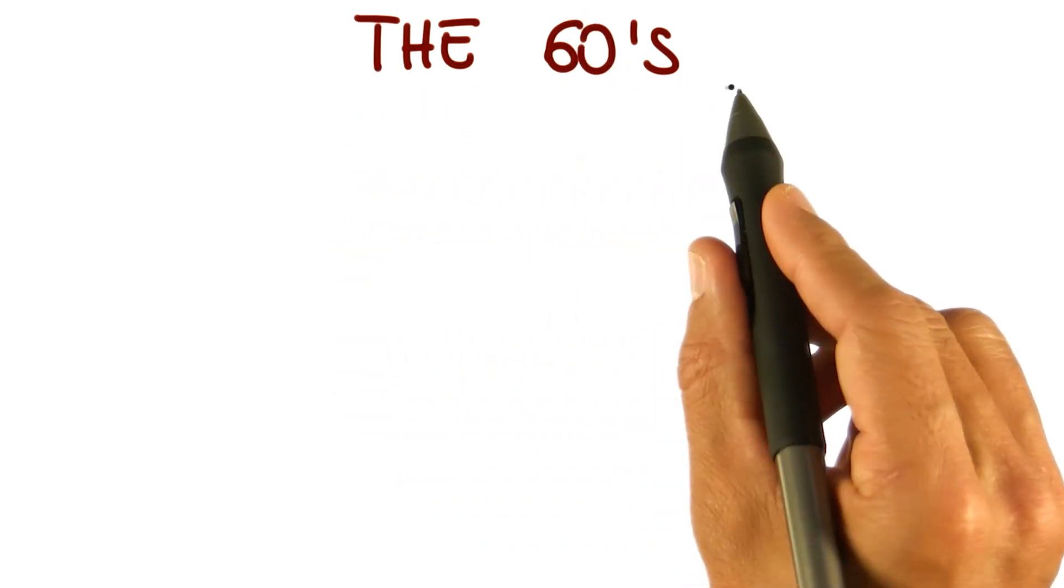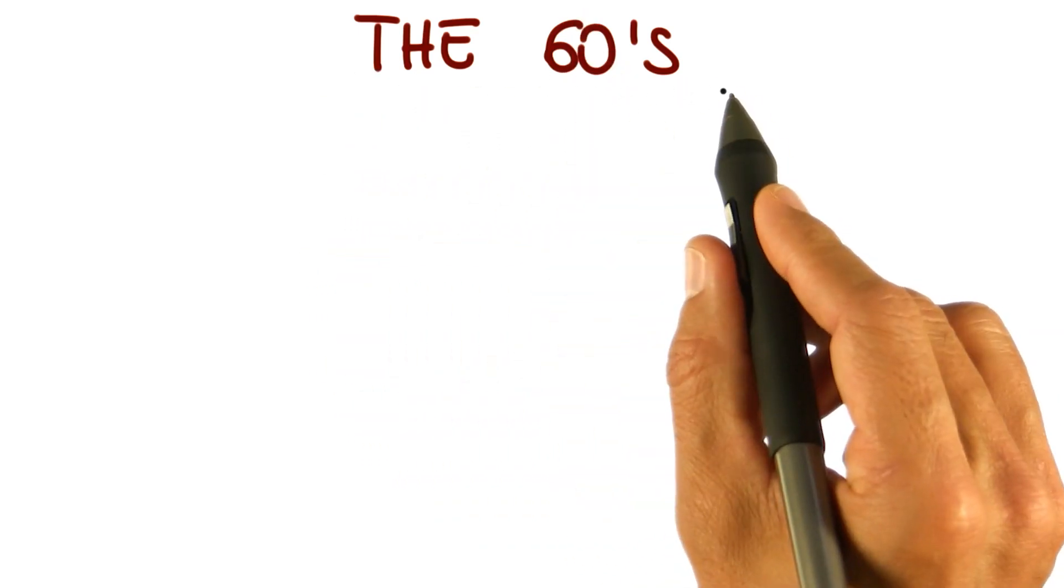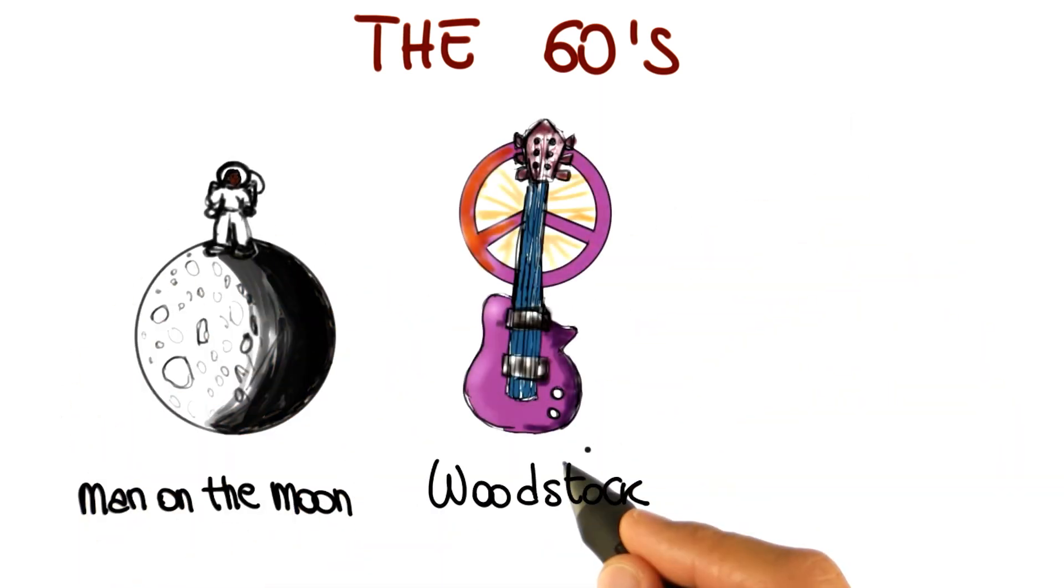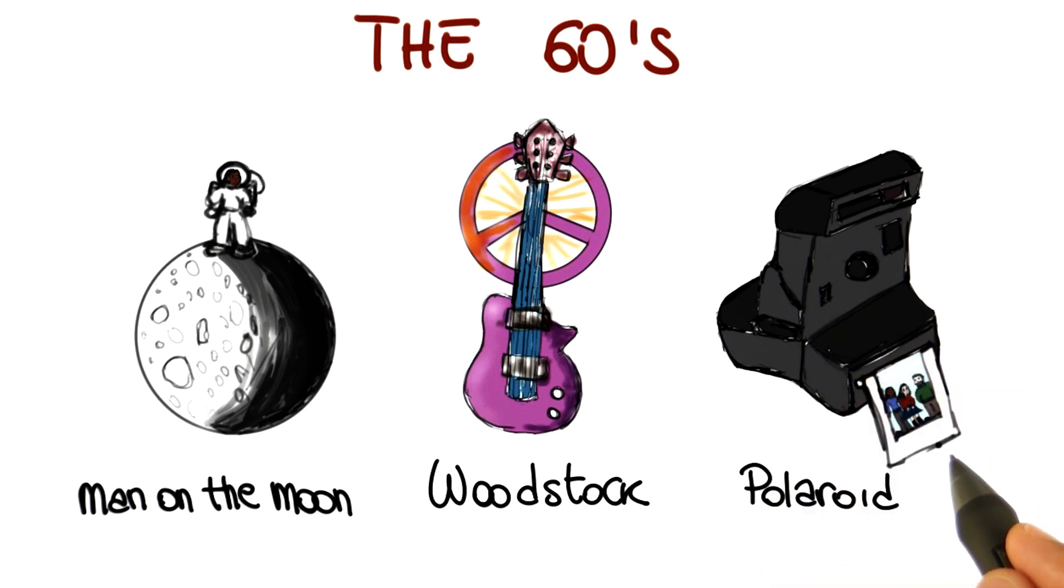To do that, we'll have to go back in time to the late 60s. So what was happening in the 60s? Well, for example, the first man landed on the moon. That was also the time when Woodstock took place, and also the time when the first 60 second picture from Polaroid was created.